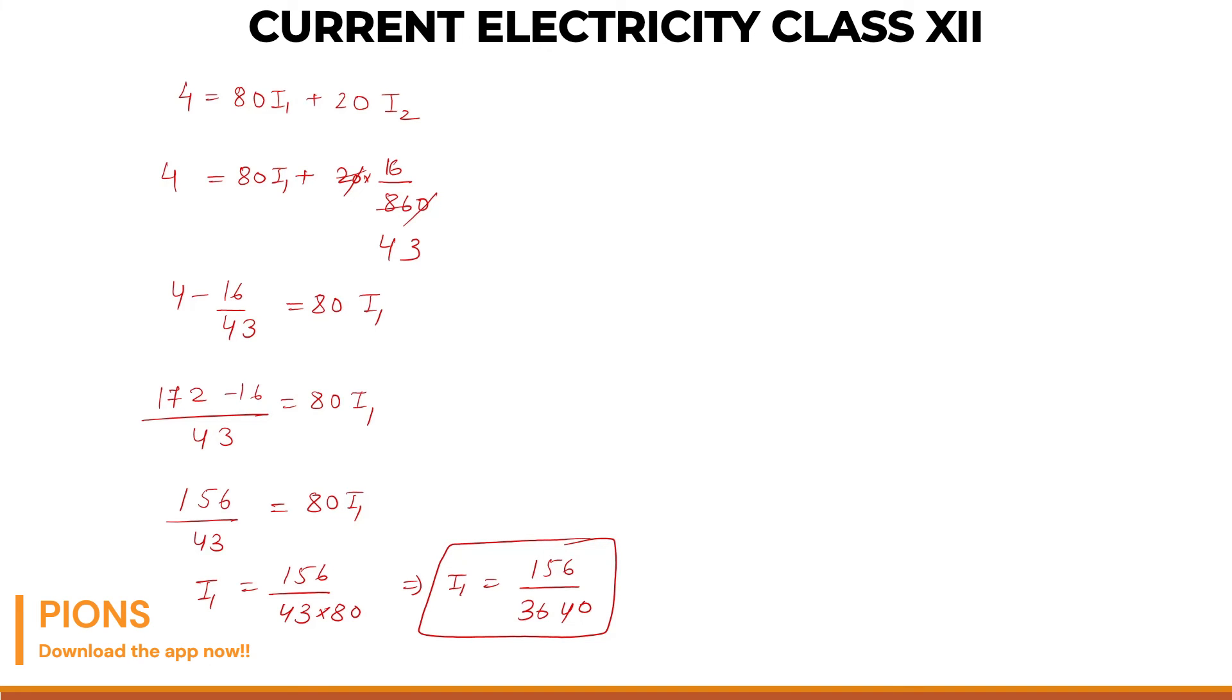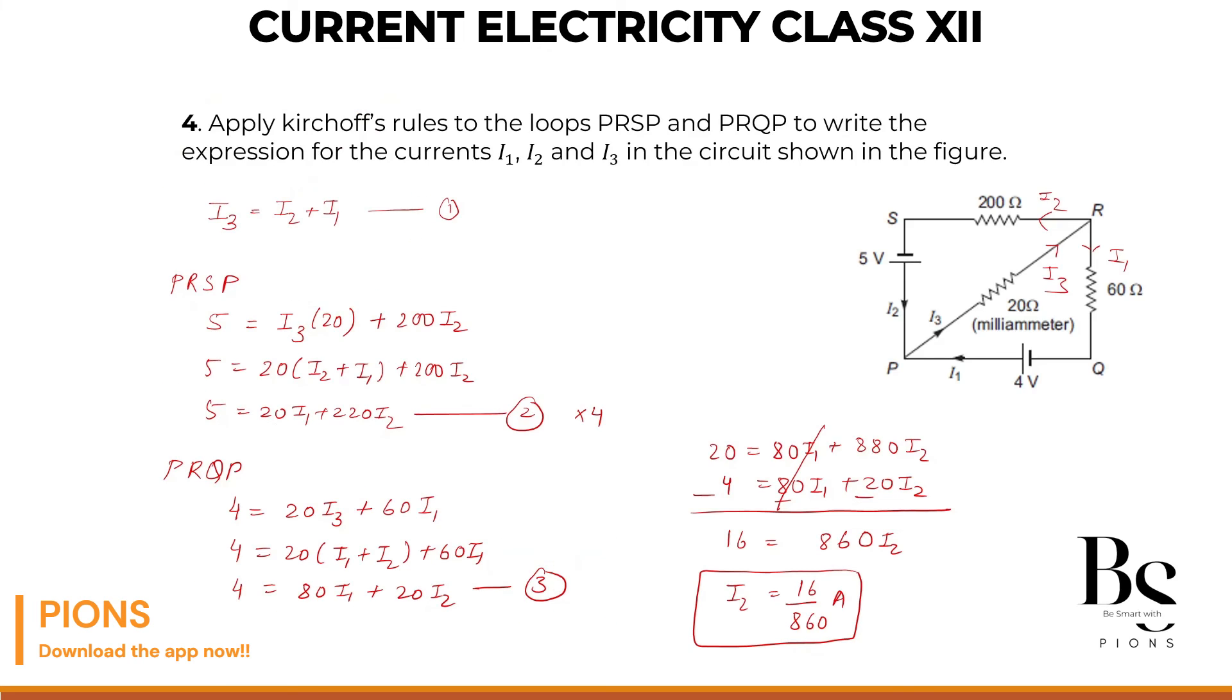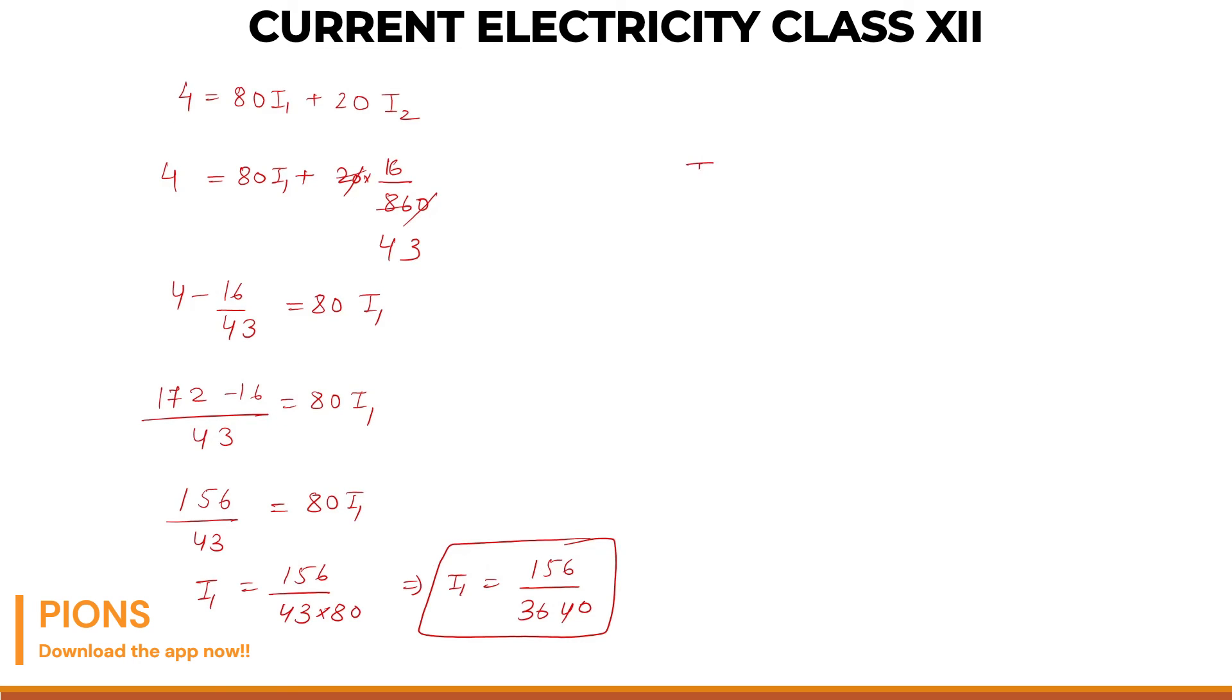If this is our I1, what is our I2? Our I2 was 16 by 860. So I2 is 16 by 860. So I3 will be I1 plus I2. So let's add it. Let's divide 156 by 2. That will be 78 upon 3440. 3440 divided by 2, 1720. Let's cancel out 178 again with 2. 39 and 1720 divided by 2, that's 860. That's correct.